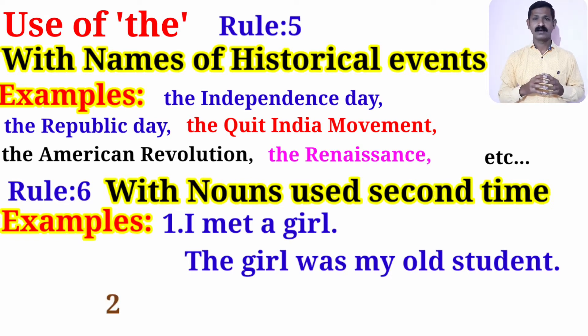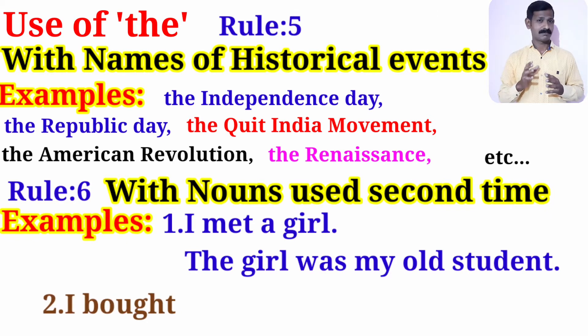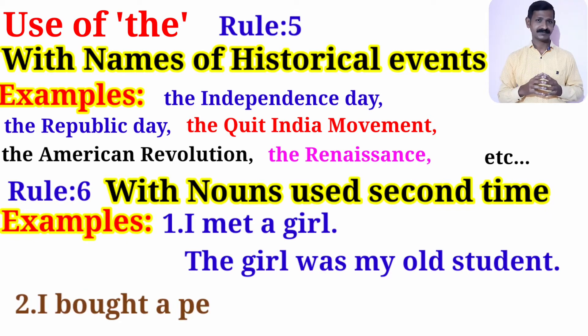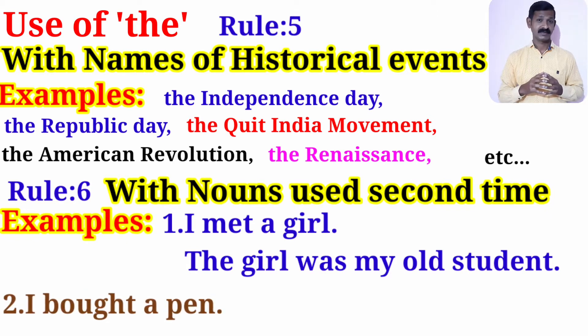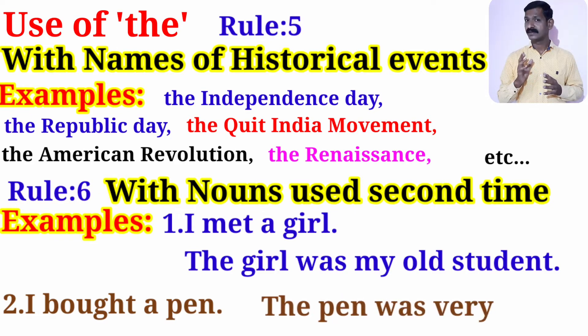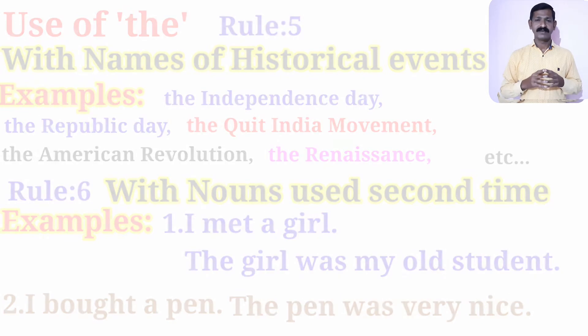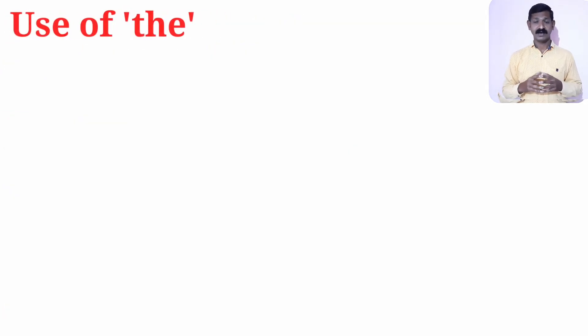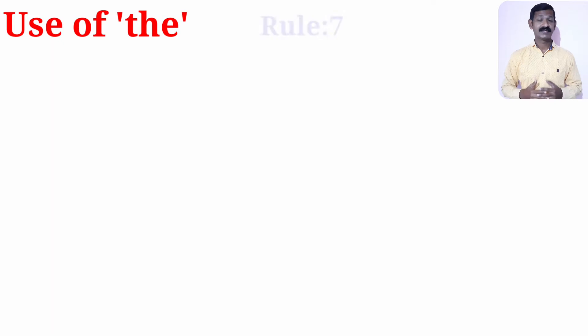Another example: 'I bought a pen. The pen was very nice.' So when we use a noun for the second time, we use article 'the' with it.